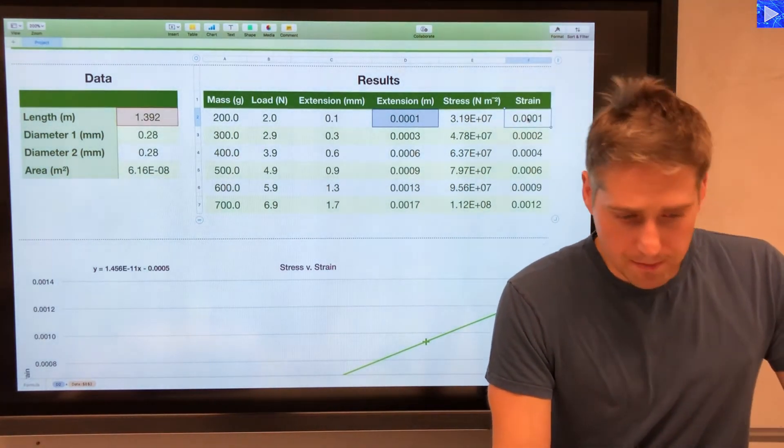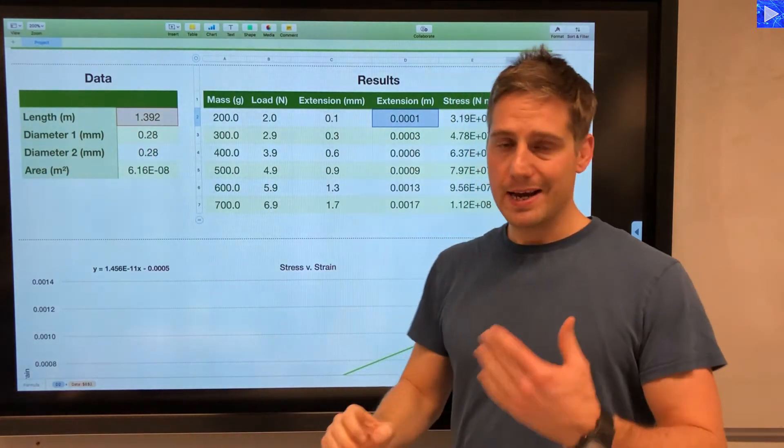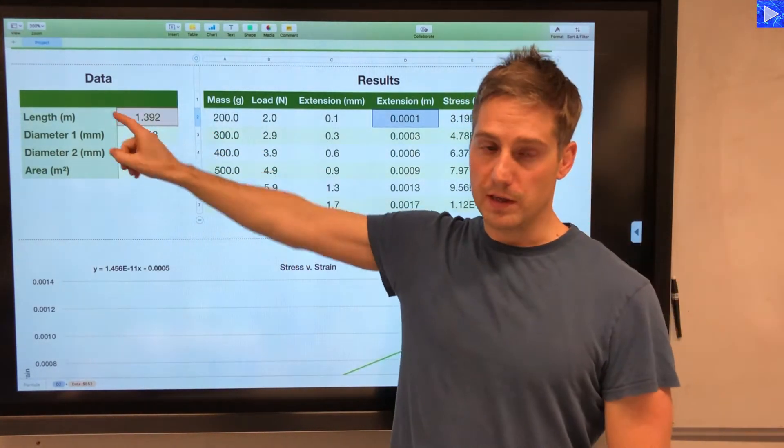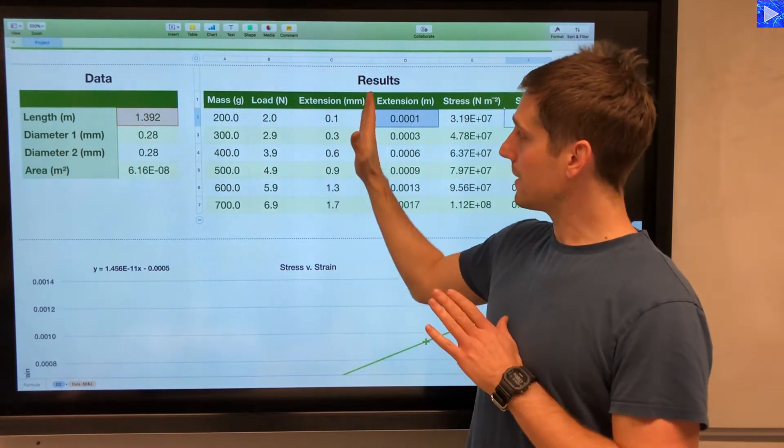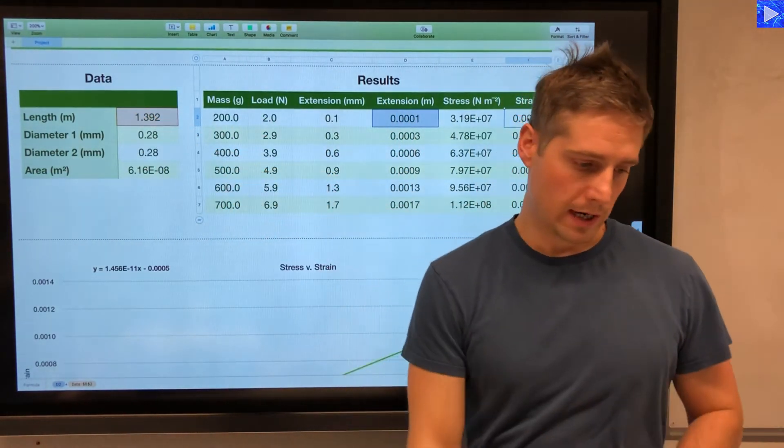And then the strain. To work out strain, we're dividing the extension by the length. Again, I need to use a fixed data reference for this cell here, so that all of my extension values here are always divided by the original length up there.